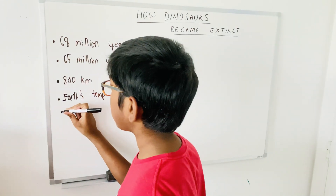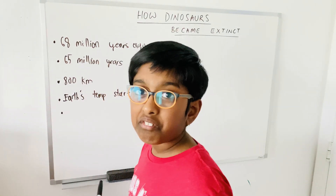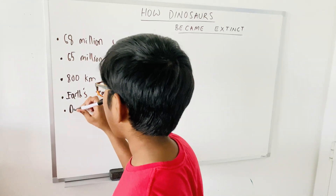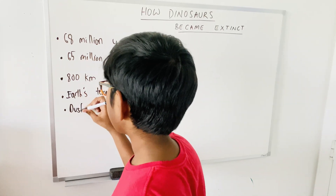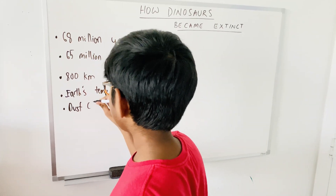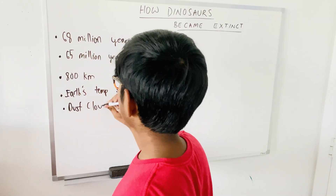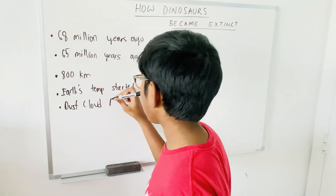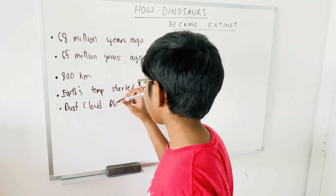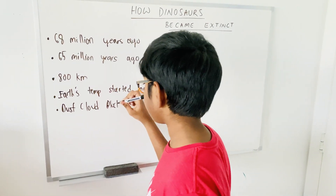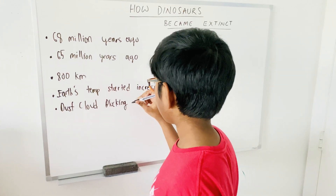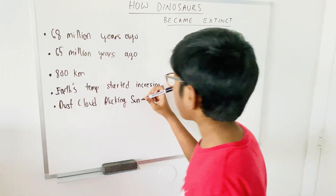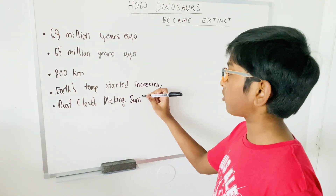After the temperature increased, a big dust cloud covered the entire Earth, blocking sunlight. The dust cloud blocked all sunlight.